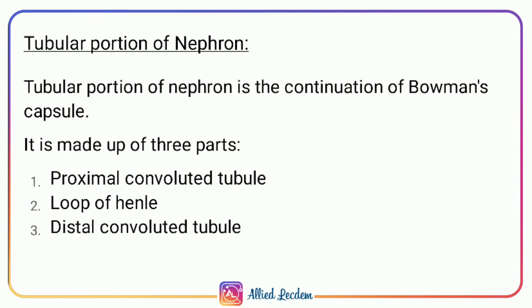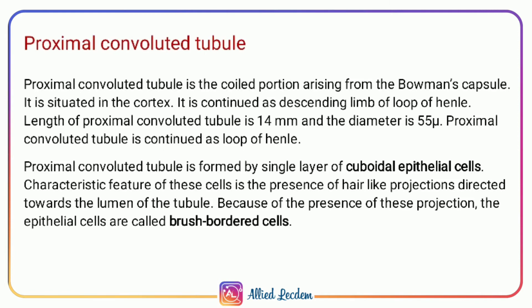The tubular portion of the nephron is a continuation of Bowman's capsule and is made up of three parts: the proximal convoluted tubule, loop of Henle, and distal convoluted tubule. The proximal convoluted tubule is the coiled portion arising from Bowman's capsule, situated in the cortex, and continued as the descending loop of Henle.